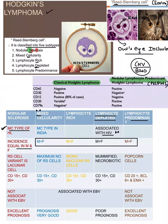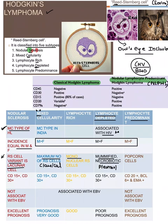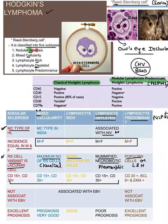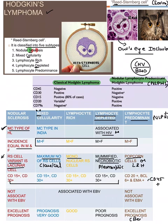To recap: nodular sclerosis has equal male and female incidence; all others are male predominant. Nodular sclerosis has lacunar cells and the maximum number of Reed-Sternberg cells. Lymphocyte rich has few mononuclear cells. Lymphocyte depleted may show mummified, necrobiotic, or pleomorphic cells. NLPHL has popcorn or LNH cells, is CD20/CD45/BCL-6/EMA positive, has the best prognosis, and is not EBV-associated.